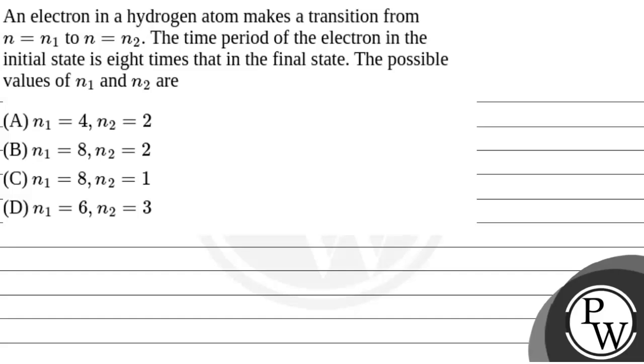Hello Bacho, the question says here, an electron in a hydrogen atom makes a transition from n is equal to n1 to n is equal to n2. So, an electron makes a transition from n equals n1 to n equals n2.